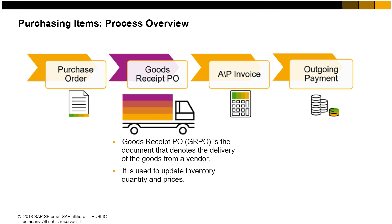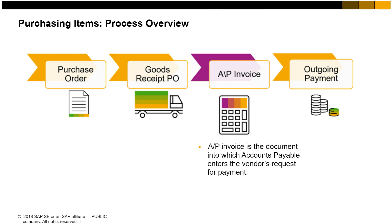The goods receipt PO is the document that denotes the delivery of goods from a vendor to a company. It is used to update the inventory quantities and values. The AP invoice is the document into which your accounts payable department enters the vendor's invoice information to request a payment be made to the vendor.